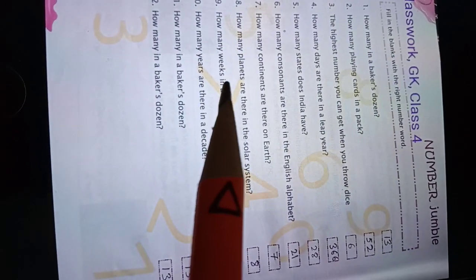Number eight: how many planets are there in a solar system? Eight. Number nine: how many weeks in a fortnight? Two weeks.